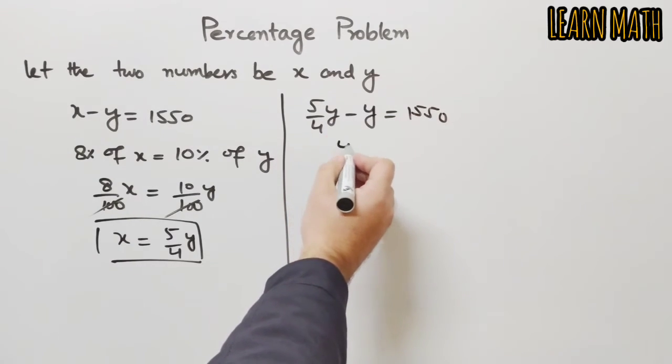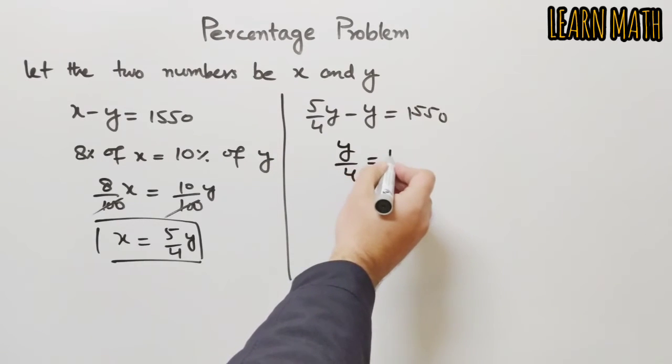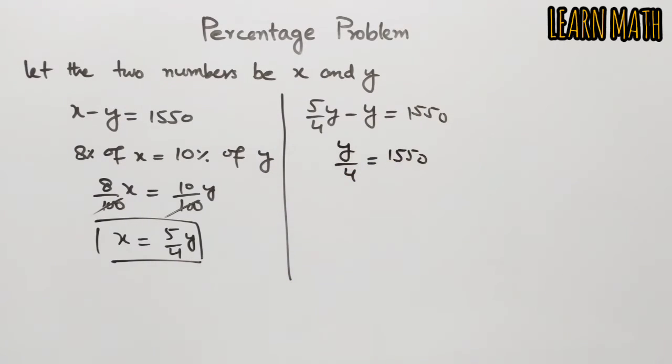So we will get y by 4 is equal to 1550. We will multiply 4 on both sides, so y is equal to 6200.